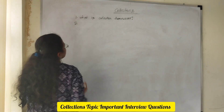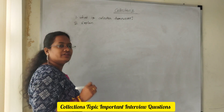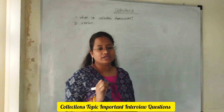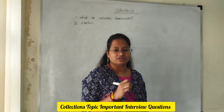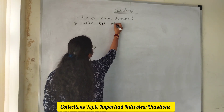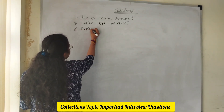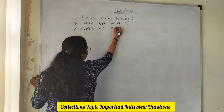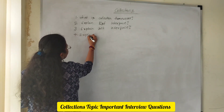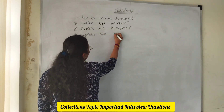The second question is: explain the list interface. We mainly have four interfaces — list, set, map, and queue. You need to explain the list interface, set interface, and map interface.